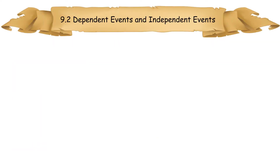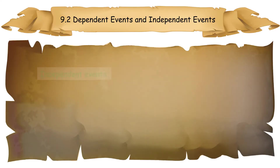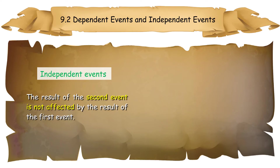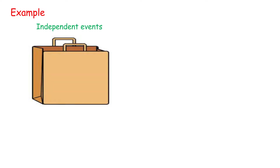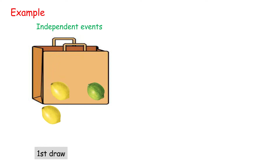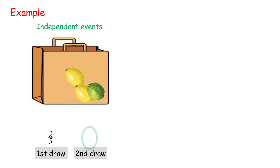9.2 Dependent Events and Independent Events. If the result of one event is affected by the result of another event, the events are said to be dependent. Example of Independent Events: Drawing fruits from a bag with replacement. There are two lemons and one lime in a bag. Randomly draw a fruit from the bag, then put the fruit back and draw a second fruit. The probability of drawing the second fruit does not depend on the outcome of the first drawing.